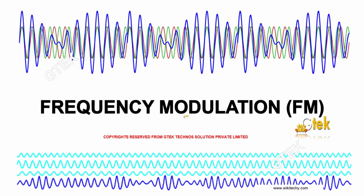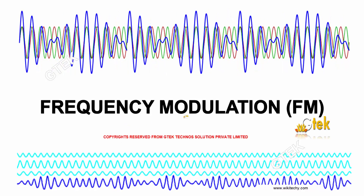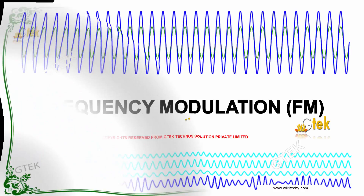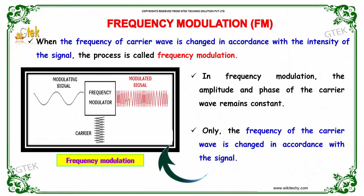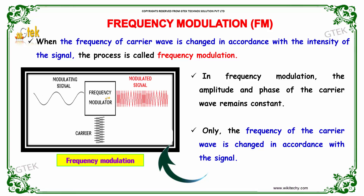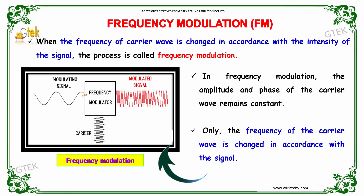This is about frequency modulation. When the frequency of the carrier wave is changed in accordance with the intensity of the signal, the process is called frequency modulation. In frequency modulation, the amplitude and phase of the carrier wave remain constant. Only the frequency of the carrier wave is changed in accordance with the signal.